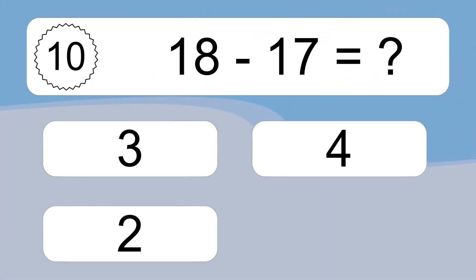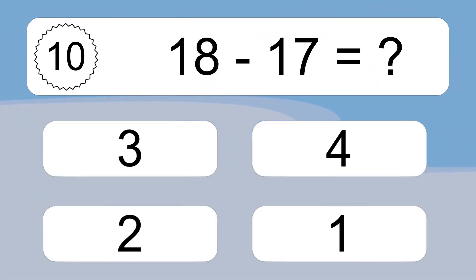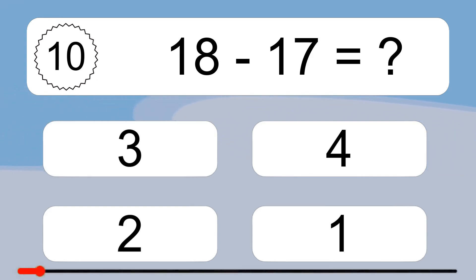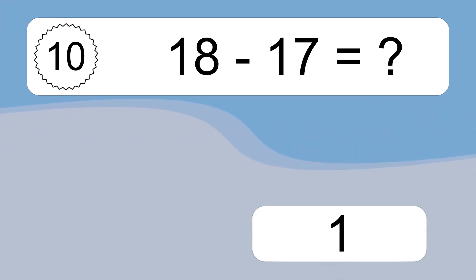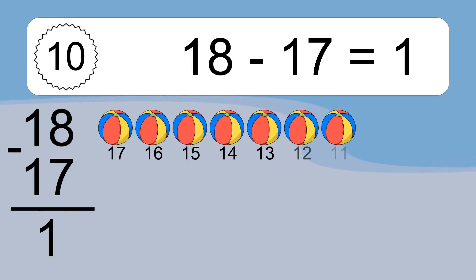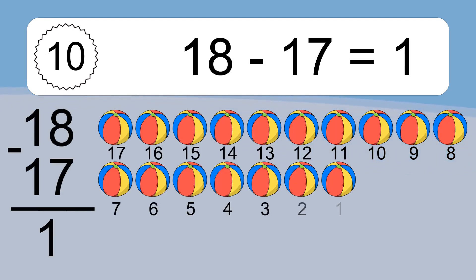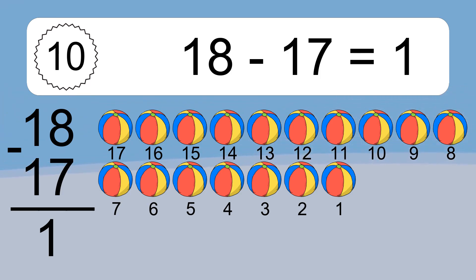18 minus 17 equals what? 18 minus 17 equals 1. Let's count it. 17, 16, 15, 14, 13, 12, 11.